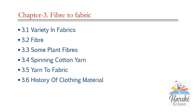Fabrics are of different kinds, as we all know, and fabric is going to be prepared with the help of fiber. Fiber is the basic unit required for making the fabric. From the fiber, yarn is going to be made, and with the help of this yarn, fabrics are manufactured. So these fabrics are of different types.